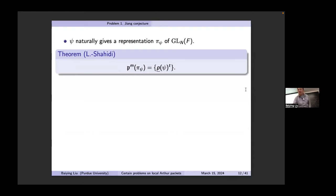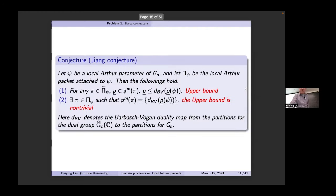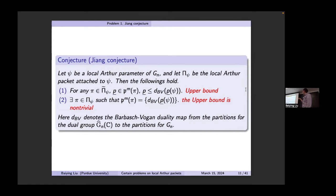Johnson's conjecture was originally formulated for global Arthur packets, locally and with analogs like this. Johnson proved this upper bound part for the global Arthur packet for classical groups, but the second part — non-triviality — is globally still open, though some cases have been done.